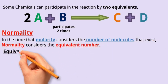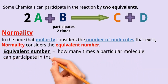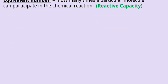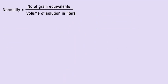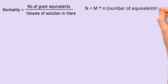In other words, it considers how many times a particular molecule can participate in the chemical reaction. In scientific words, an equivalent number is a measure of the reactive capacity of a substance in a chemical reaction. Normality equals the number of equivalents divided by volume in liters. Also, we have a relation between normality and molarity. That is, normality N equals molarity M multiplied by the number of equivalents.